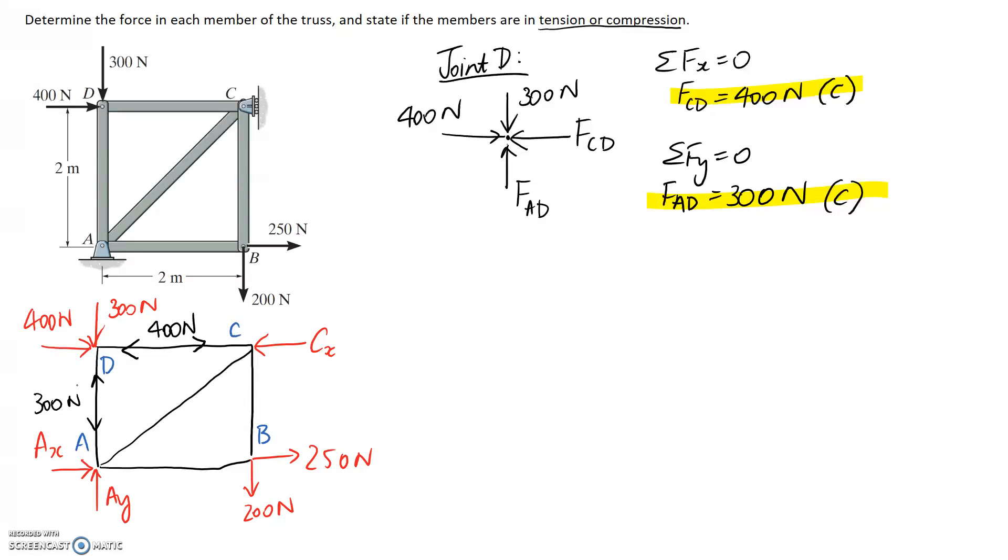Now we need to pick another spot to have a look at. I think the next easiest one to pick would probably be B but you could of course pick C as well. Actually, C you have too many unknowns. You only know 400 newtons pushing onto it here. You don't know the force in this member, this member or the reaction. So that's a bad choice as well. So this one is the only one that we can solve next.